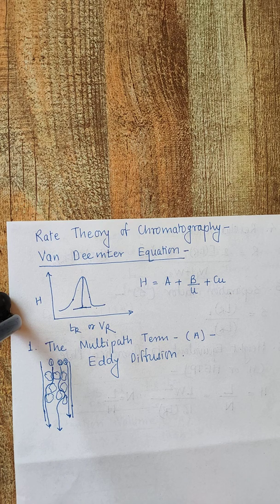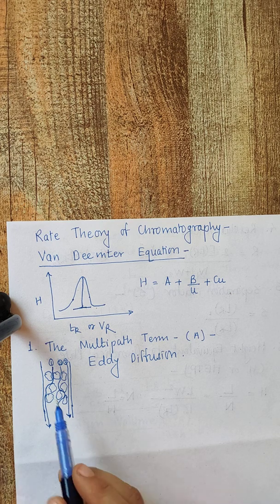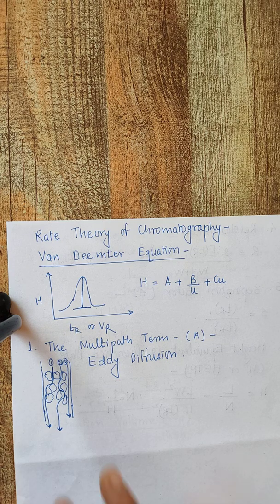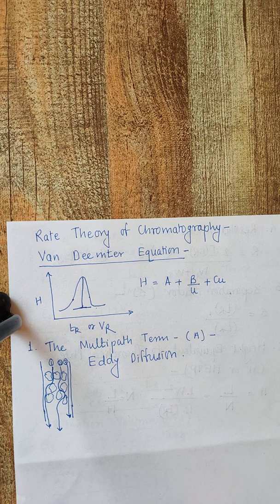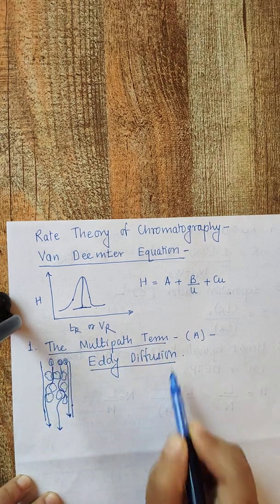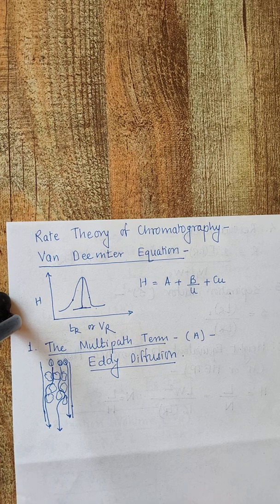At high flow rates, sufficient time is not available for molecules to take numerous paths. The molecules will therefore reach the detector or elute from the column at nearly the same time, and hence band broadening is reduced. This contribution from non-equal path lengths is known as the multi-path term or eddy diffusion.